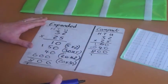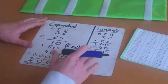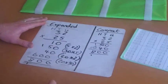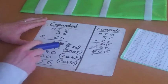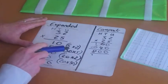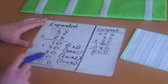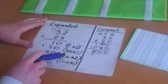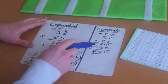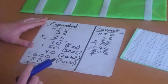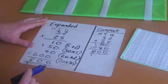Both answers are of course the same. The compact method is a lot quicker, though slightly more complicated. The children like the expanded method because they can actually see all their workings out, and if they do make a mistake, they can easily go back and check. Whereas with the compact method, it's not so easy — however, it is a quicker and more efficient method.